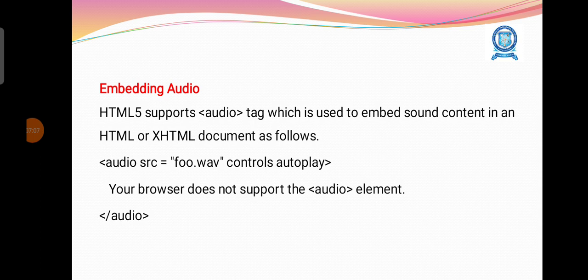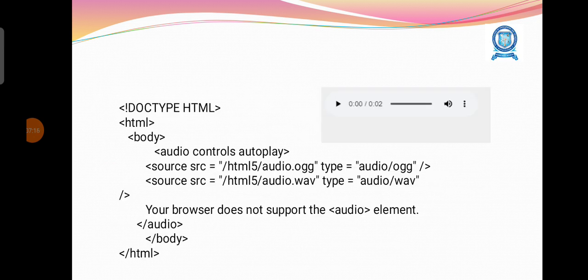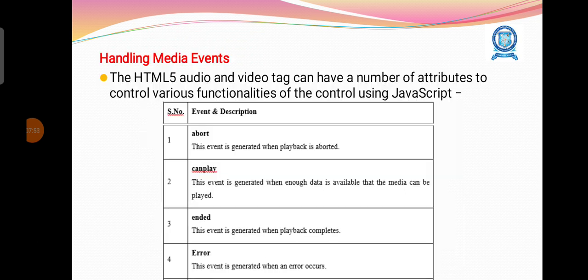Similarly, we can include the audio element in our web page using the audio tag. Similar to video, we mention the source file name of the audio we want to include, and also the type of the audio file, like ogg or wav. This coding shows we have included the audio file using the audio tag, and the output shows the audio control element in the web page to play the audio file. There are also several attributes associated with audio to control its look, feel, and functionality, such as autoplay, autobuffer, controls, loop, preload, and src.